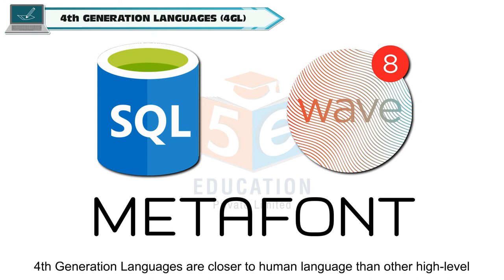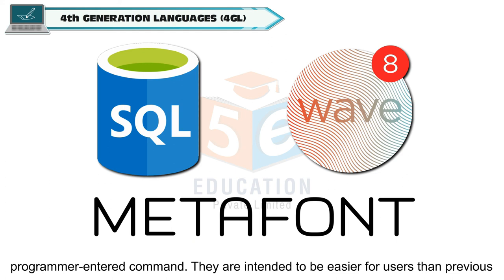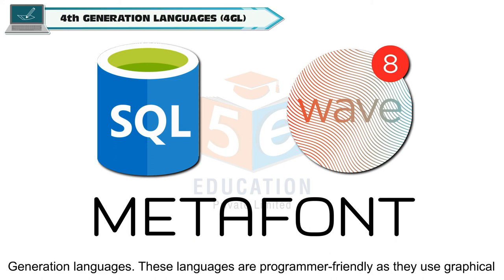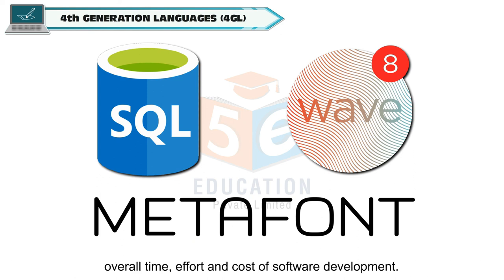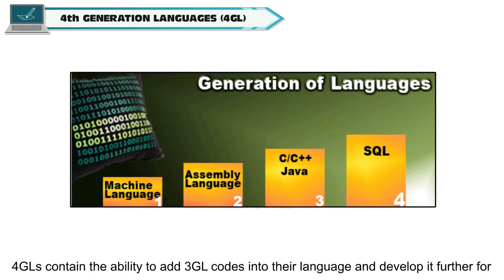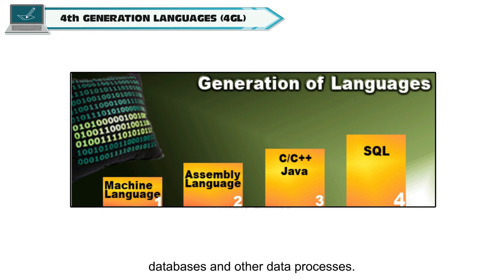4th generation languages are closer to human language than other high-level languages. They allow multiple common operations to be performed with a single programmer-entered command and are intended to be easier for users than previous generation languages. These languages are programmer-friendly as they use graphical interfaces, drag-and-drop, touch-screen support and icons. 4GLs are designed to reduce the overall time, effort and cost of software development. They also contain the ability to add 3GL codes and are mainly used for working with databases and other data processors.